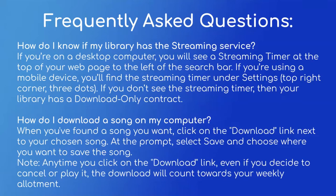How do I download a song onto my computer? Once you've found a song you want to listen to, click on the download link next to your chosen song. At the prompt, select save and choose where you want to save the song. An important note: anytime you click on the download link, even if you decide to cancel or just play it, the download will count towards your weekly allotment. So be careful which songs you're downloading and make sure they're ones you actually want.